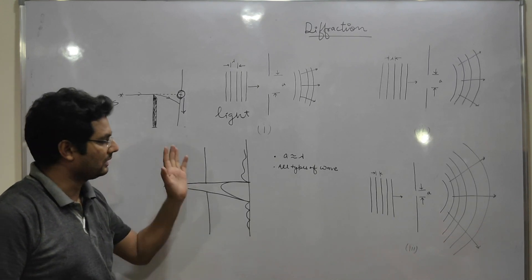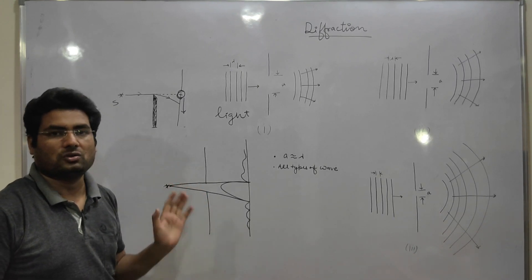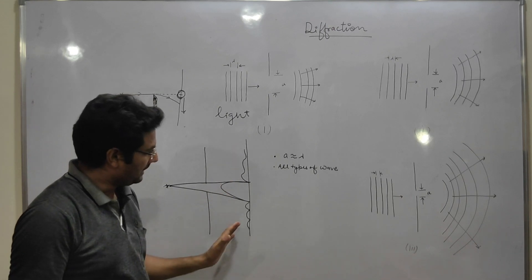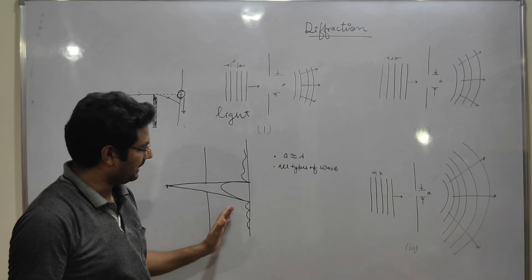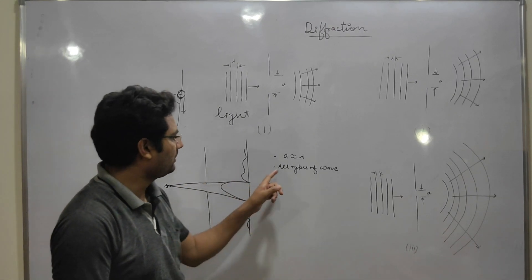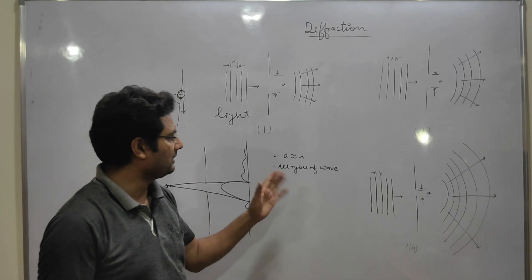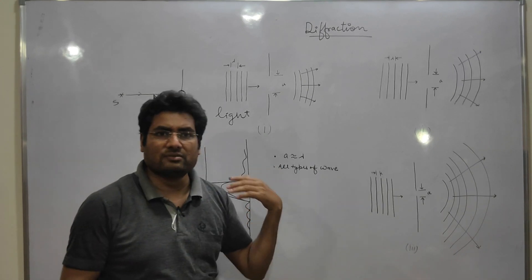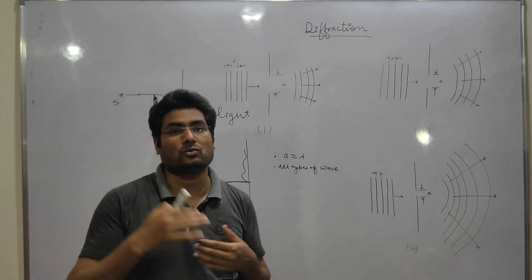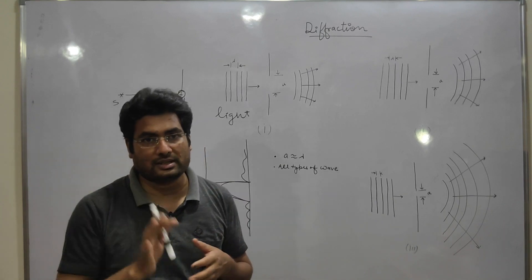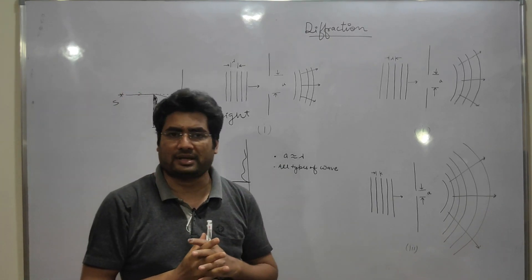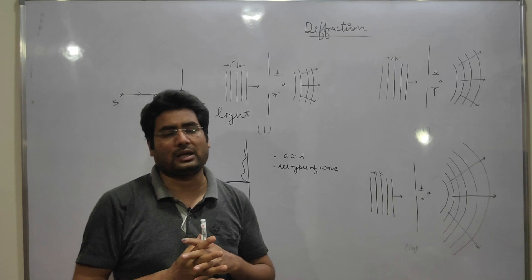When light bends around a barrier, we call it diffraction. The diffraction phenomenon allows all types of waves — whether it is sound waves. For example, if we are sitting in one room, we can hear sound from another room. This is diffraction.